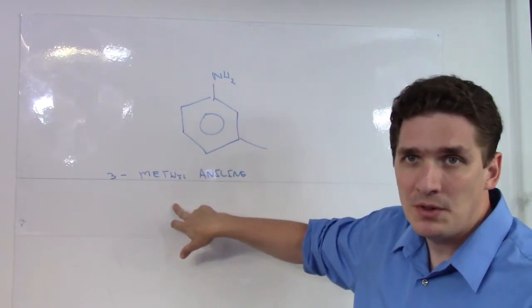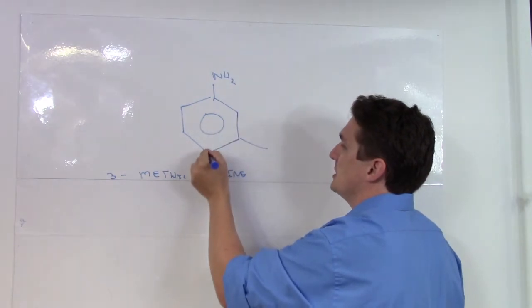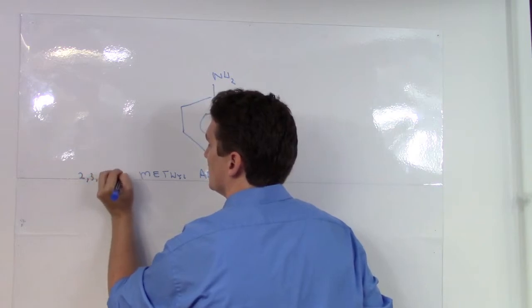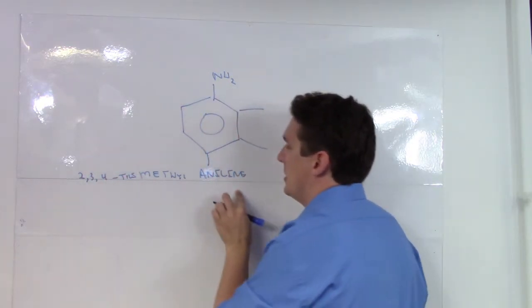In the event that we have more than one substitution, so let's say we have 3, we would have to stick with the numbering system: 2, 3, 4-tri-methyl-aniline.